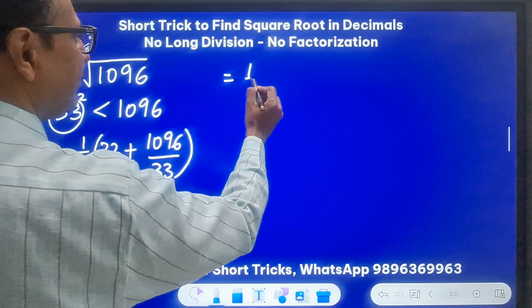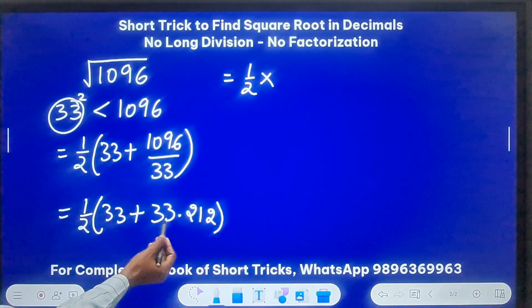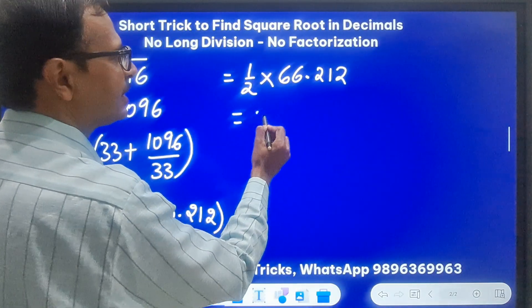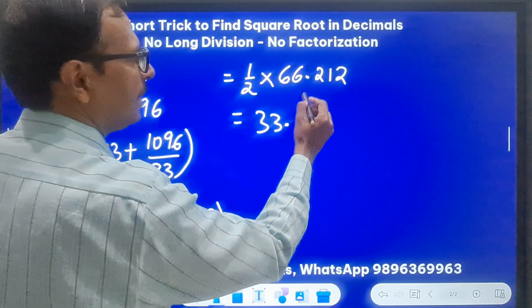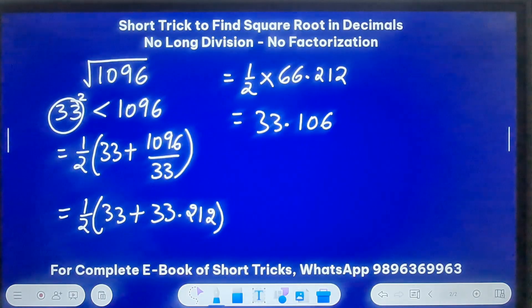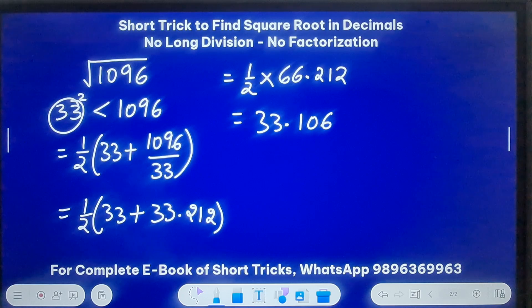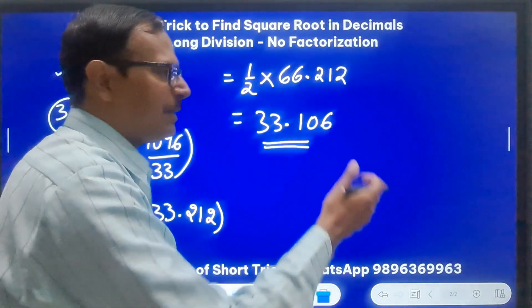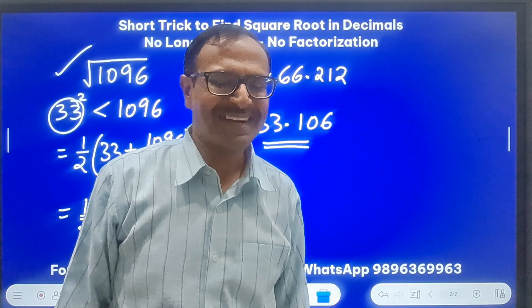So what does this become? Half of - this is 66.212, and 66.212, the half is 33 point 106. Yeah, 33 point 106. And you can check using the answer now. Is this square root of 1096, 33 point 106? Right.